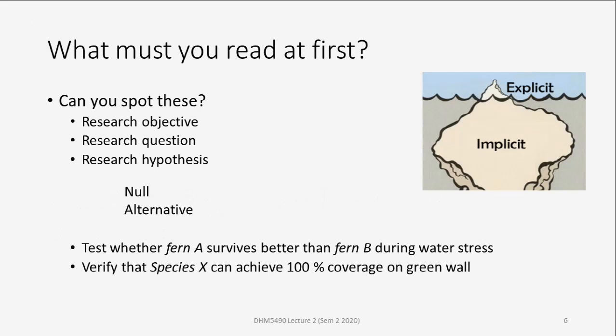In the abstract or in the introduction section of an academic research paper, you will always find three pieces of information. The first one is the research objective. The objective may be very clear — maybe you want to evaluate something, investigate a phenomenon, or prove something. That is the objective.